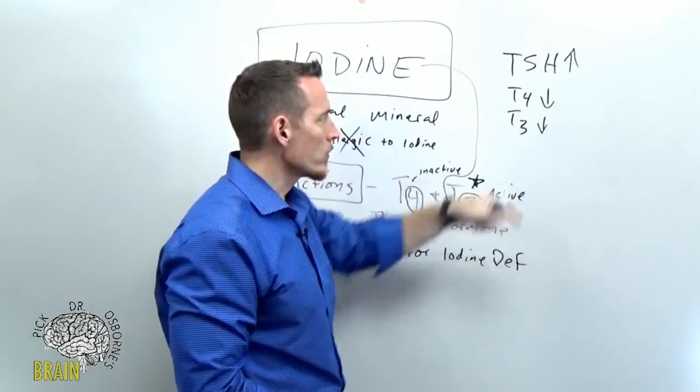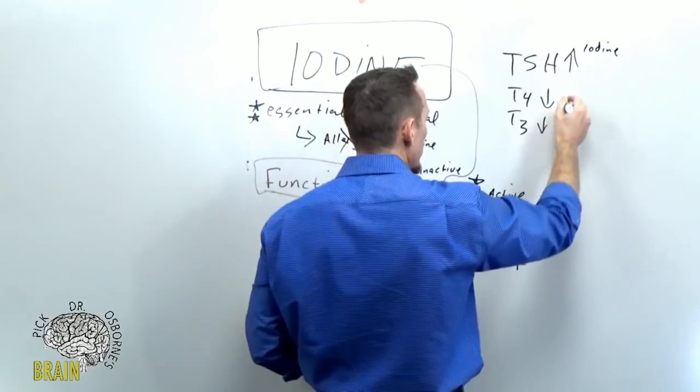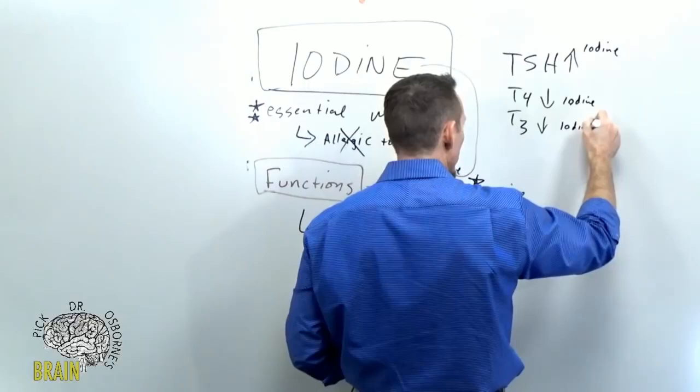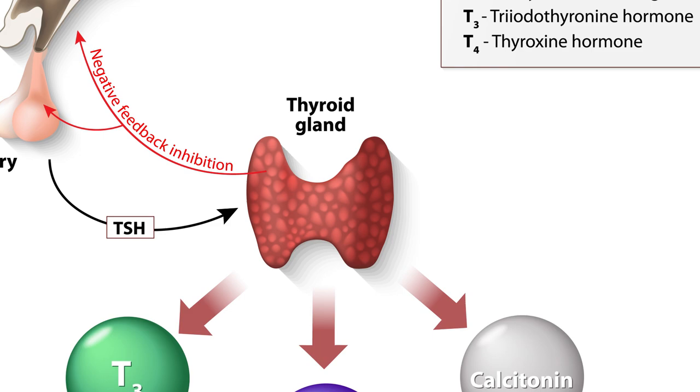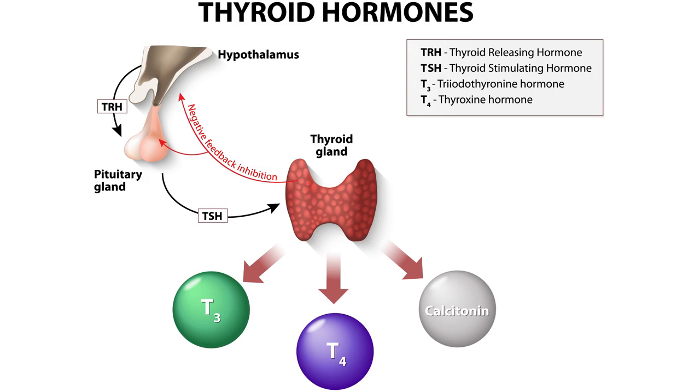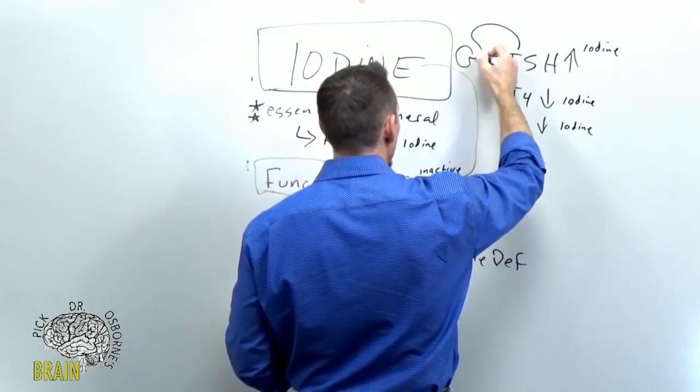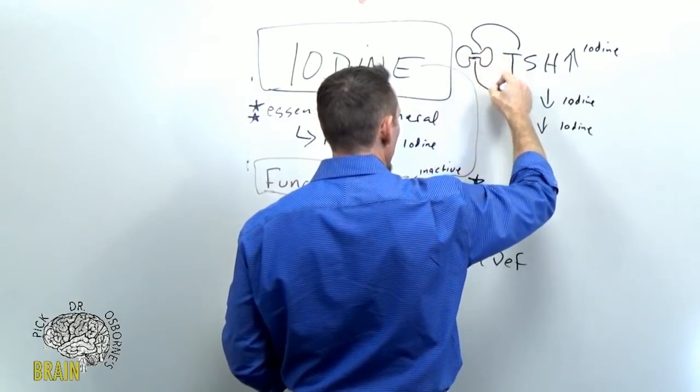Remember one of the main reasons why TSH will be elevated is iodine deficiency. One of the main reasons why T4 would be low is iodine deficiency. Same thing with T3, iodine deficiency. Now there are certainly other nutrients at play here. The TSH stands for thyroid stimulating hormone. And this is a hormone produced by your brain. And what it does is it travels to your thyroid gland and it tells your thyroid gland to produce T4.